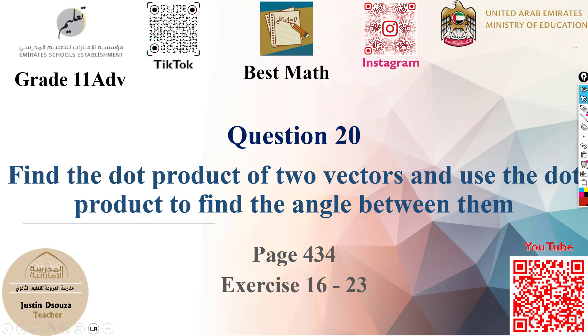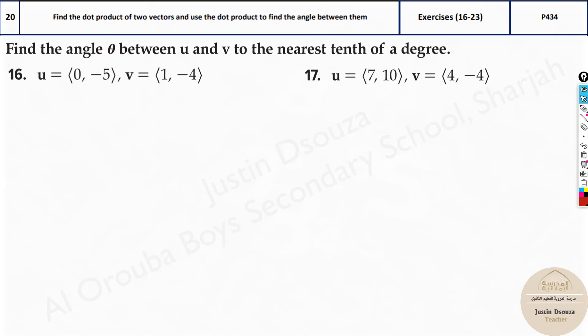We move on to the last question of the writing part, that is question number 20, which is to find the angle between two vectors. Now in my personal opinion, I find this to be easiest among all the other writing questions because you should just know one simple formula.